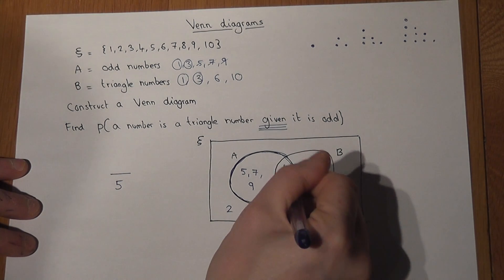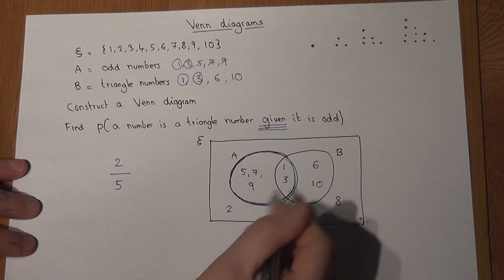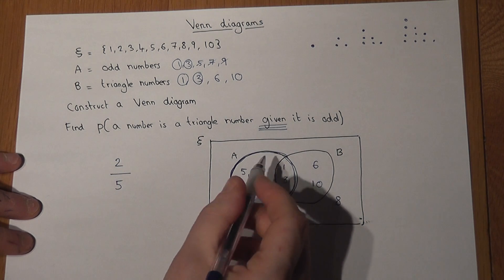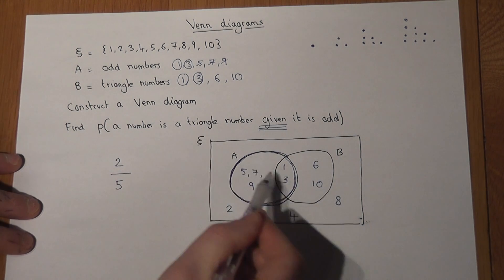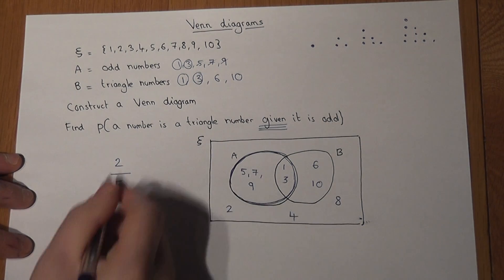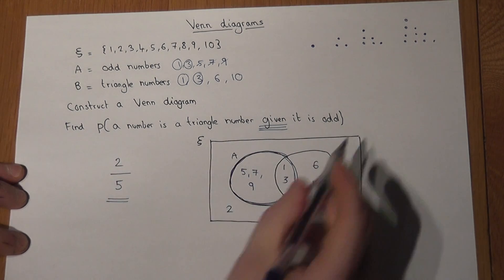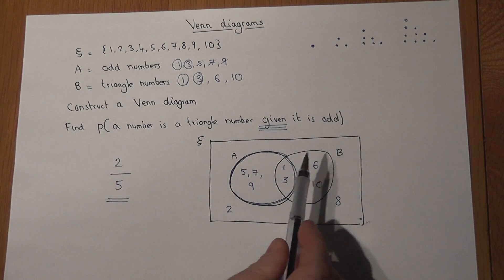So 2 out of the 5 are triangle. 3 are not. So the chance of a number is a triangle given it is odd is 2 fifths. And so 2 fifths is the answer to that particular question.